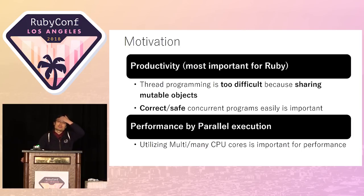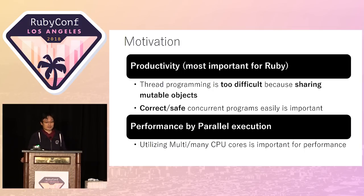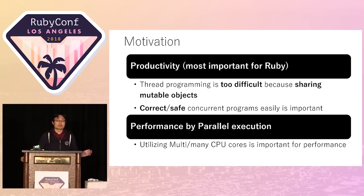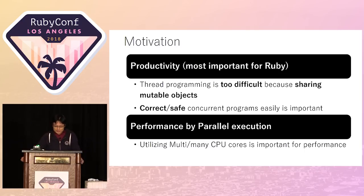One motivation is productivity. As at Mark's keynote yesterday, productivity is the biggest concern. My opinion is that threads are very, very difficult to use to make thread-safe programs. There are many reasons for the difficulty of thread programming, but the biggest problem is sharing mutable objects between threads — it makes it very difficult to write correct, thread-safe concurrent programs.